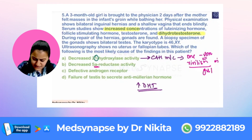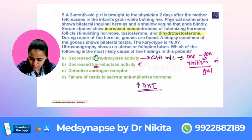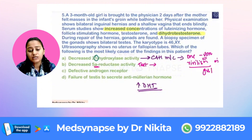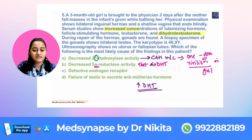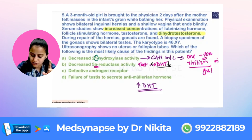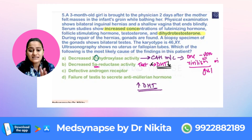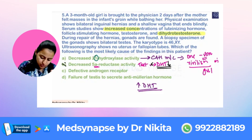If there is decreased 5-alpha reductase activity — what does 5-alpha reductase do? It converts testosterone to dihydrotestosterone. So if this enzyme is defective, the dihydrotestosterone levels will be less and not increased, unlike what we see in this question.